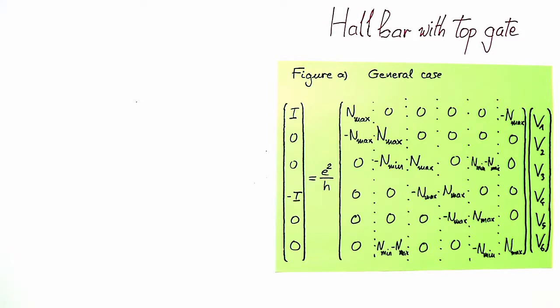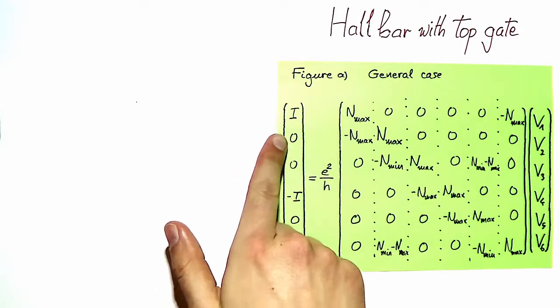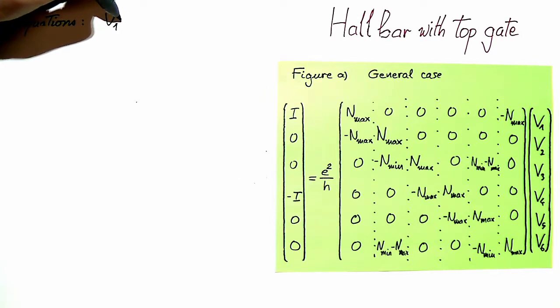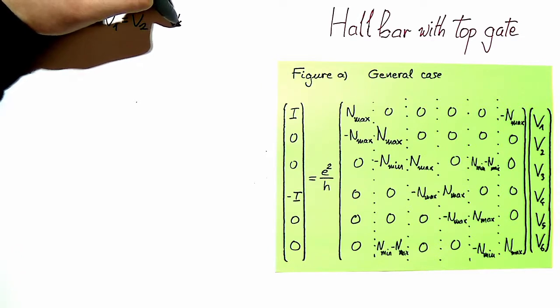So now we have to solve this linear system of equations. There are many ways to proceed, one could systematically inverse the matrix but let's write down a few equations that will be useful that we can read from here. So let's take the lines with 0 current, and if you look here and here, you can see that we read that V1 is equal to V2 and that V4 is equal to V5.